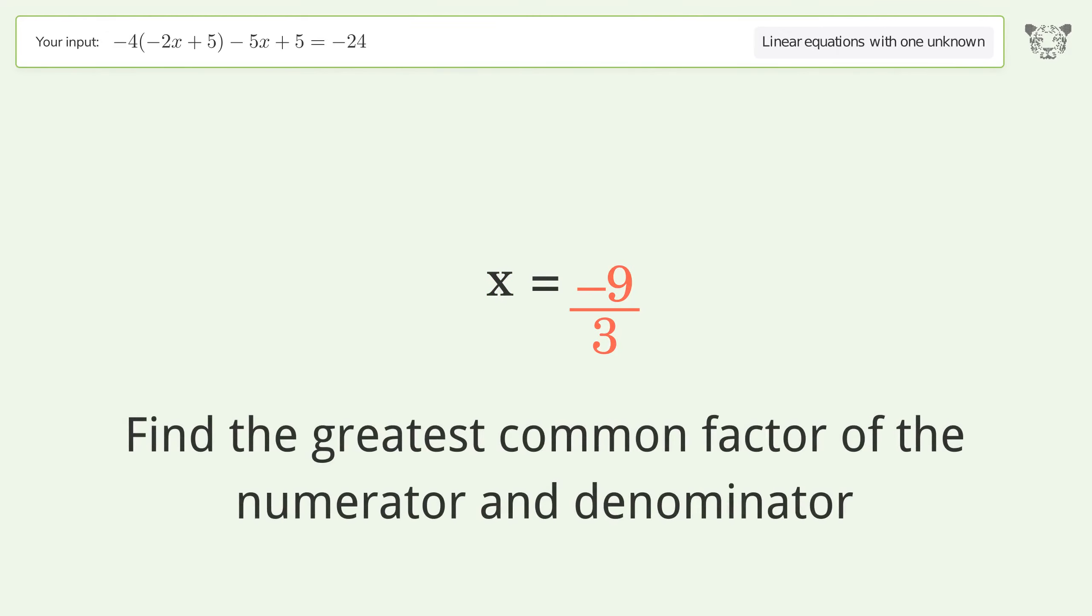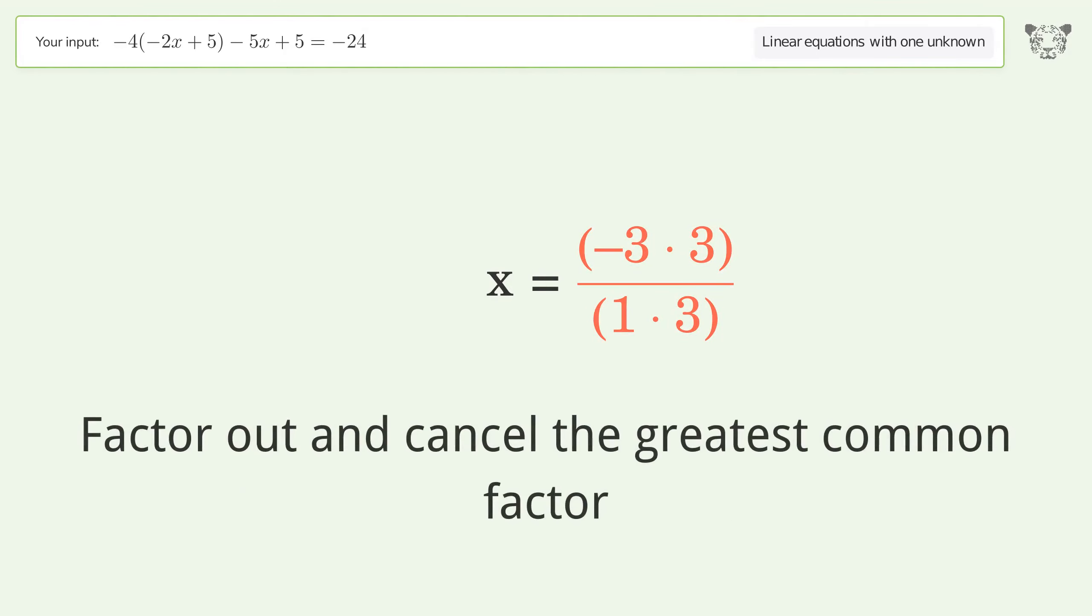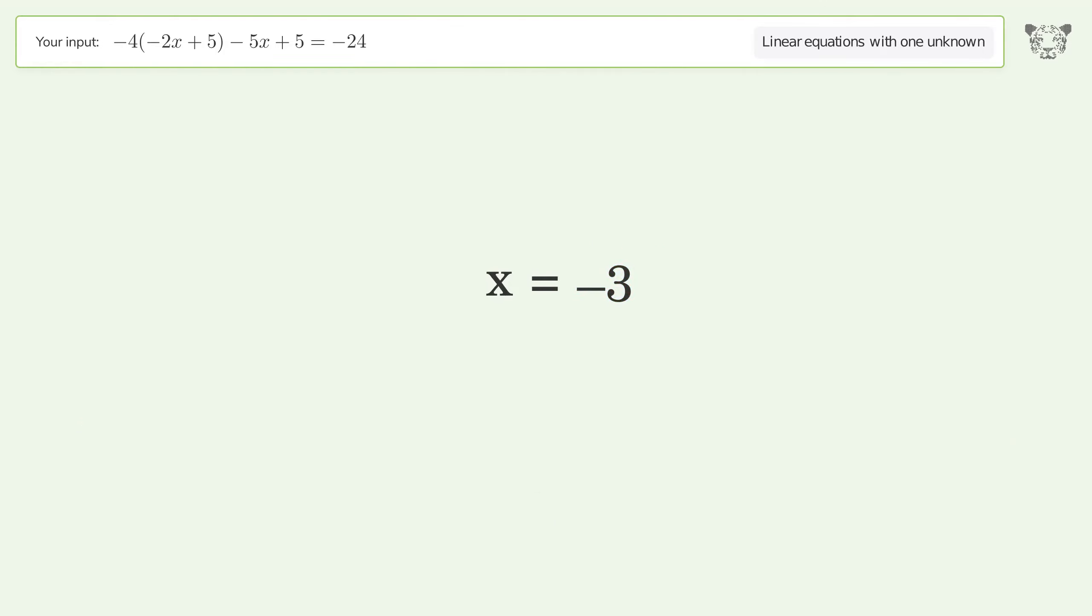Find the greatest common factor of the numerator and denominator. Factor out and cancel the greatest common factor. And so the final result is x equals negative 3.